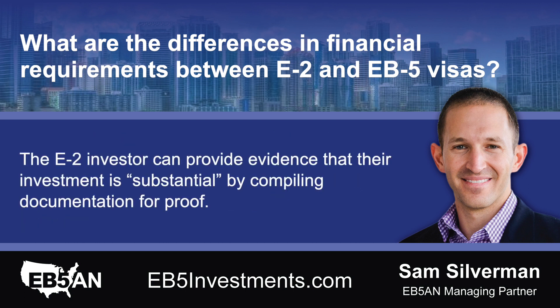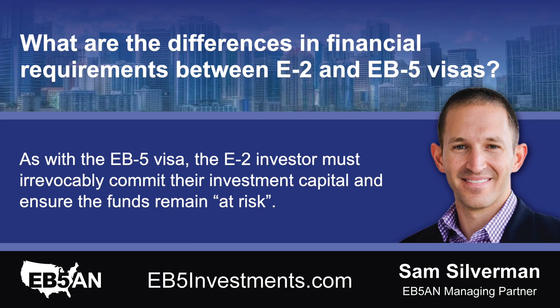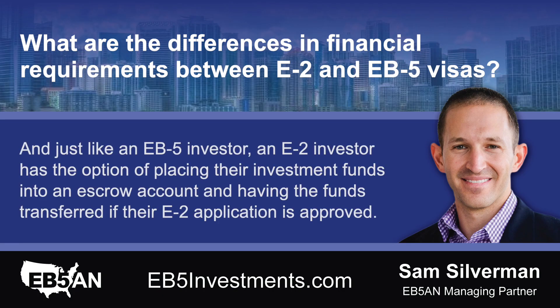The E-2 investor can provide evidence that their investment is substantial by compiling documentation for proof. As with the EB-5 visa, the E-2 investor must irrevocably commit their investment capital and ensure the funds remain at risk. And just like an EB-5 investor, an E-2 investor has the option of placing their investment funds into an escrow account and having the funds transferred if their E-2 application is approved.